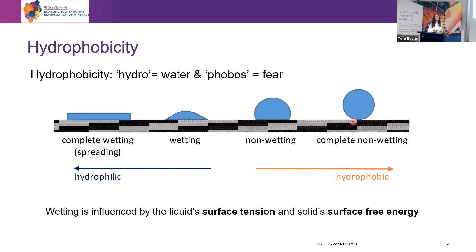I've talked about hydrophobicity — what is it? It is a property of surfaces that tells whether a material likes water or not. 'Hydro' from the Greek means water and 'phobos' means fear — so fear of water, in other words water repellent. On the left-hand side of the spectrum we have complete wetting, where the liquid likes the surface and spreads on it, and on the right-hand side we have complete non-wetting, where the surface is highly hydrophobic, so the liquid adopts a spherical shape.